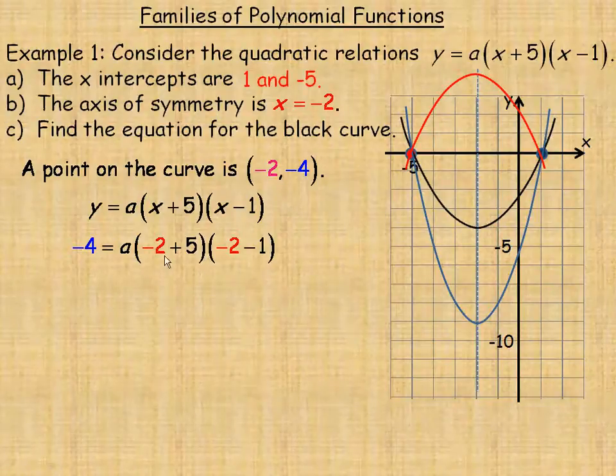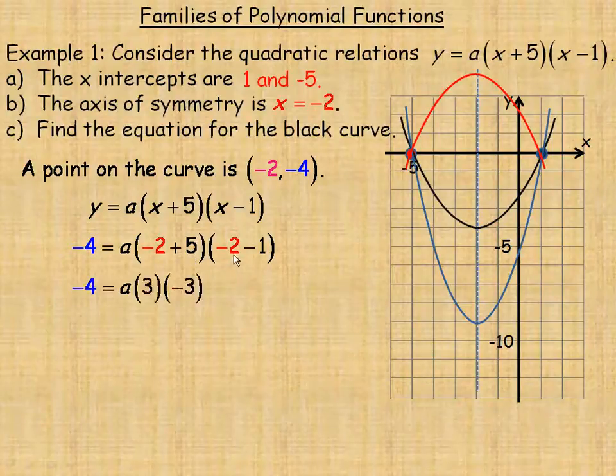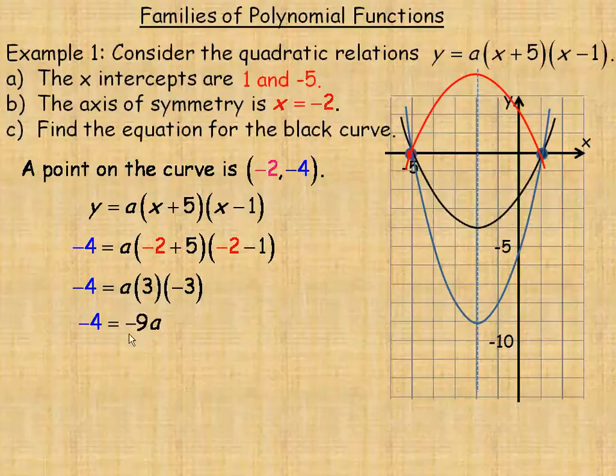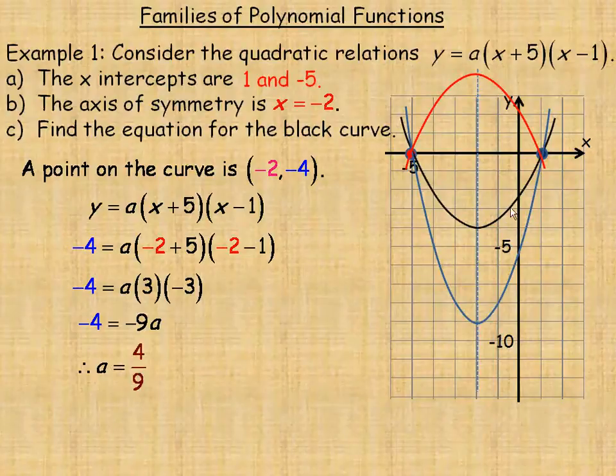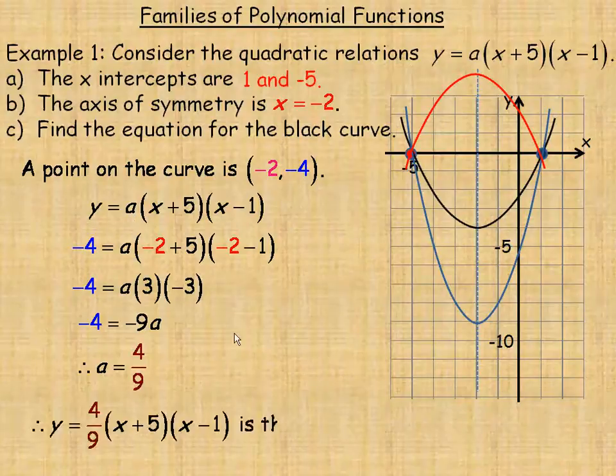What's in this bracket, negative 2 and 5 add to 3, and negative 2 and negative 1 add to negative 3. So we actually have negative 9a here. Negative 4 equals negative 9a, and then we can divide both sides by negative 9. So a would be negative 4 over negative 9, which reduces to 4/9. That's the stretch factor for this particular curve. We would rewrite the equation with 4/9 in place of a, and then that's the equation for this specific curve.